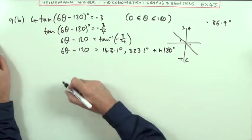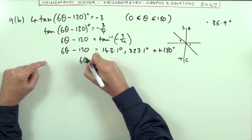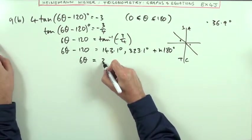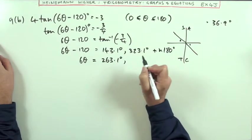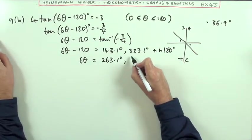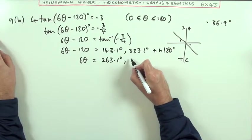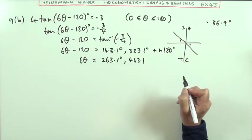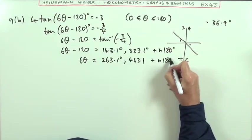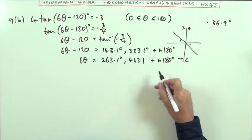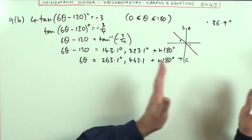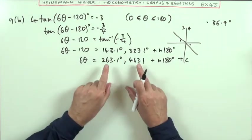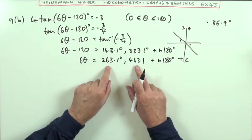Adding 120 on, 6θ will be 263.1 degrees and 443.1 degrees, plus n180. When dividing by 6, if these numbers are too big I can go back wavelengths by taking 180s off, but I can sort that out with the general solution afterwards.